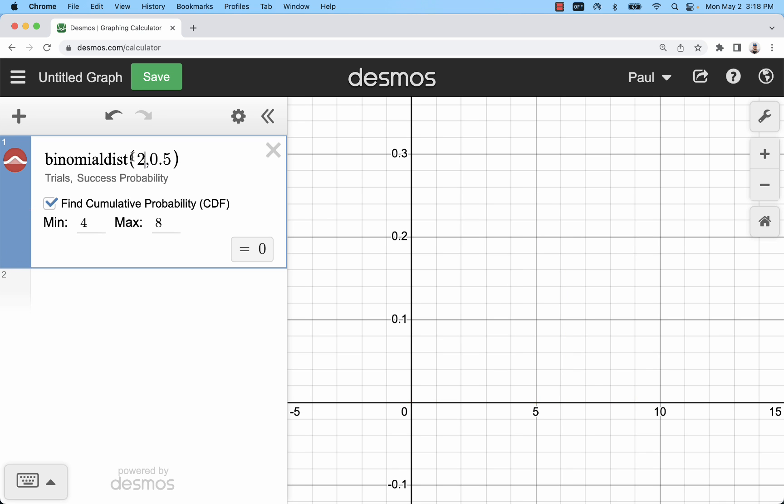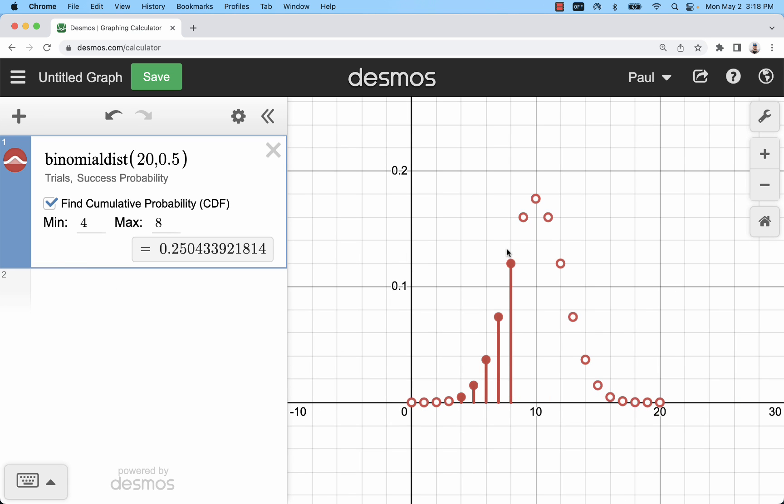And if you need to at any time, for example, if you adjust your number of trials, just hit that zoom fit button to put it right back in the center.